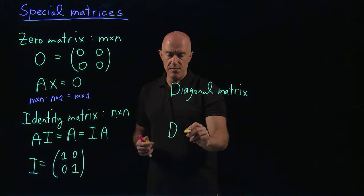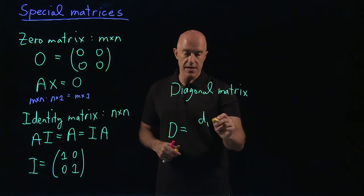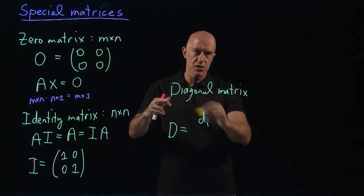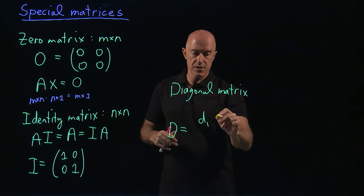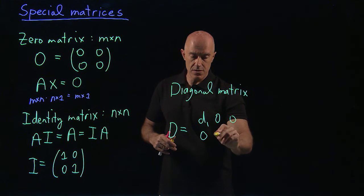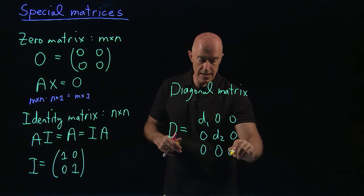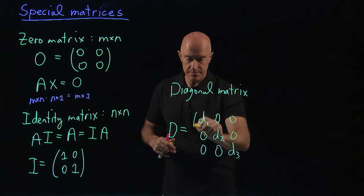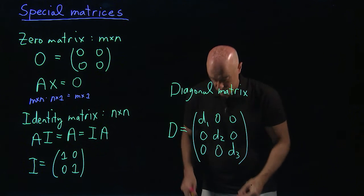A diagonal matrix then has only elements on the diagonal and zeros everywhere else. So here's an example of a diagonal matrix. If we do a 3 by 3 matrix, it would be D1 on the diagonal. The diagonal is this middle line that goes through the matrix. So 3 by 3, 0, 0, 0, and then D2, 0, and then 0, 0, and then D3. So that's a diagonal matrix.